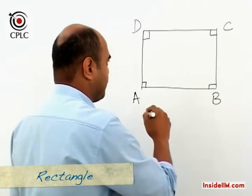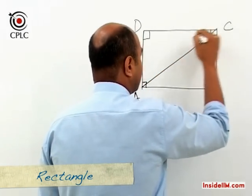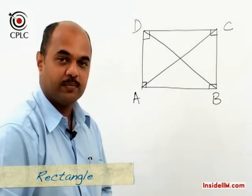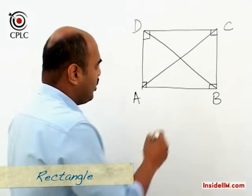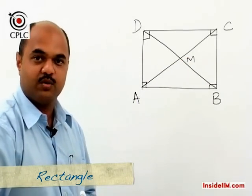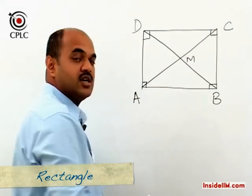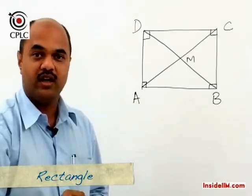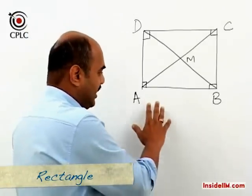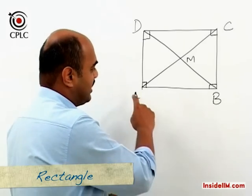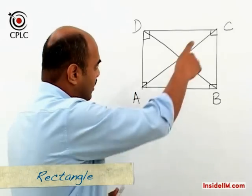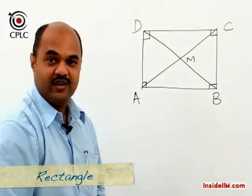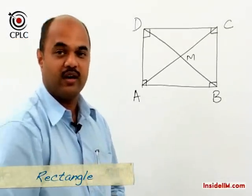Beyond parallelogram properties, an additional property for a rectangle is that diagonals are equal. Diagonals still bisect each other as in a parallelogram. When we draw both diagonals, the rectangle is divided into four triangles of equal area. To summarize: in a rectangle, all angles equal 90 degrees, diagonals are equal, and diagonals divide the rectangle into four triangles of equal area.